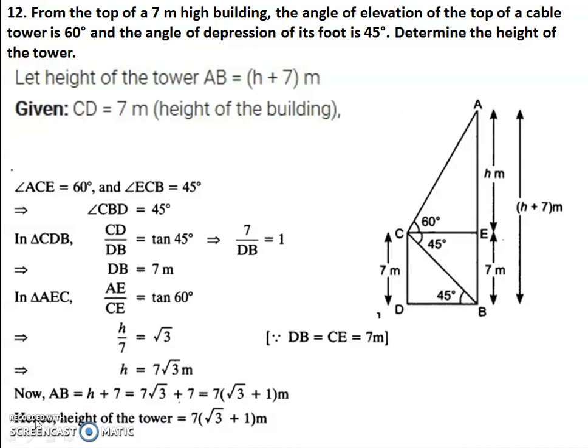Students, we will continue with the twelfth question. Let us read the question first. From the top of a seven meter high building, the angle of elevation of the top of a cable tower is 60 degrees and the angle of depression of its foot is 45 degrees. Determine the height of the tower.